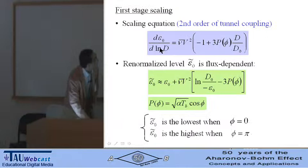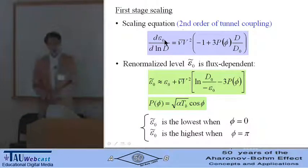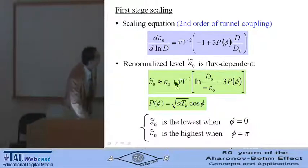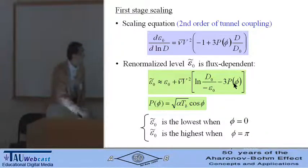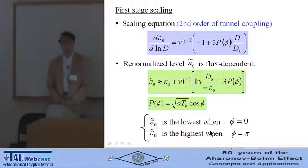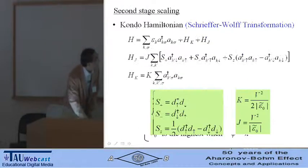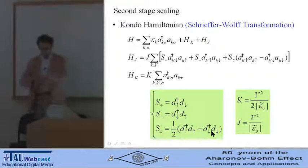In the first stage scaling, we obtain the scaling equation for the energy level in the quantum dot. This is the renormalized level in the quantum dot. It is flux dependent through the function P phi. The renormalized level is the lowest when the Aharonov-Bohm phase is zero and highest when the Aharonov-Bohm phase is pi.